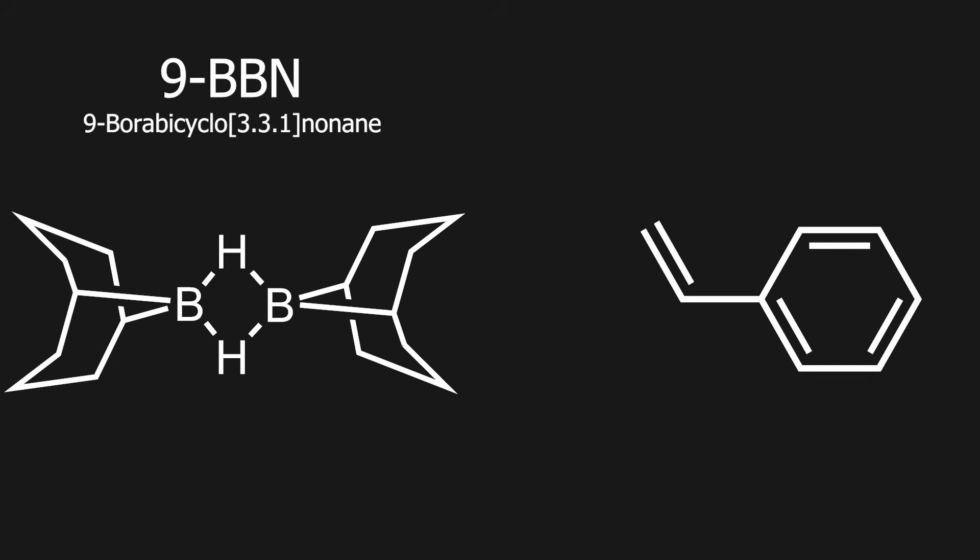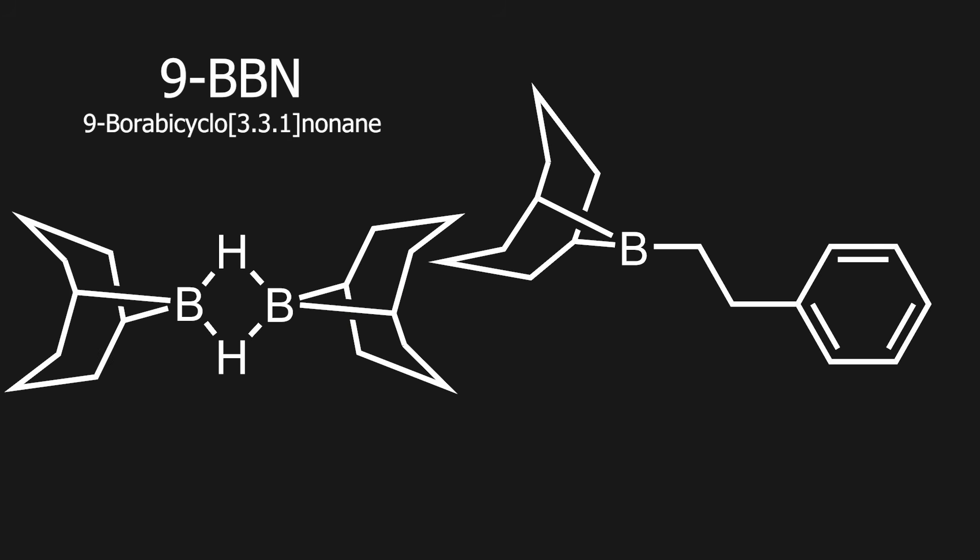For example, if we have this alkene, it will add to the terminal position, so it will not add here but only here, which results in this product. Now, either this molecule can be used in a Suzuki reaction to add whatever in place of the borane, or cleave to form a terminal alcohol.